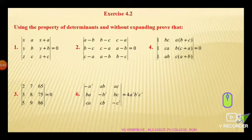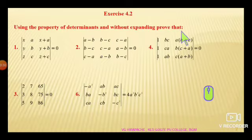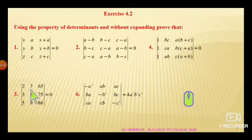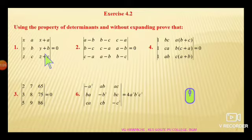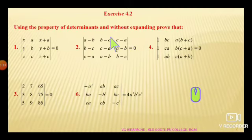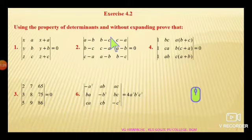Exercise 4.2. The given question is: using the properties of determinants without expanding, we have to prove that. The problems are number 1, 2, 4, 3 and 6. The remaining problems are given for an assignment. In the last two lectures, we have already studied 7 to 8 properties on determinants. By using these 8 properties, we can solve the following problems.